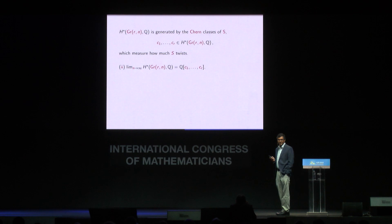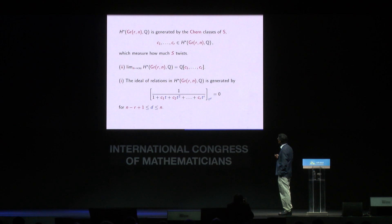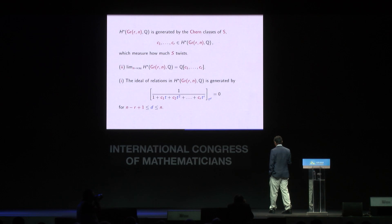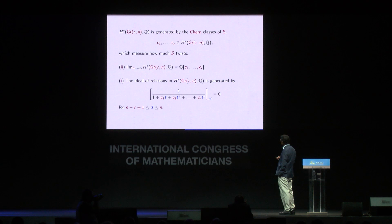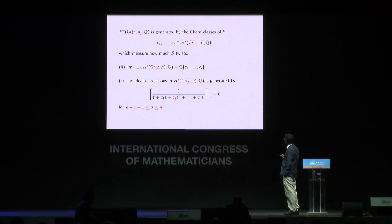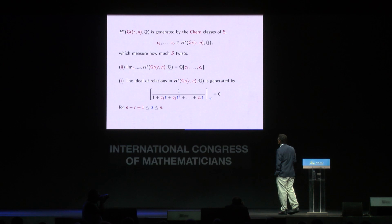The answer to the second question — the limit as n goes to infinity — is that it is the free algebra on these cohomology classes, with no relations. For fixed n the ring is not free, and the ideal of relations is given by a rather simple algebraic formula: one writes a function with a blue variable t, takes a power series expansion, and extracts coefficients that are polynomials in the Chern classes, which vanish for d in a certain range. These two lines give the complete answer for the Grassmannian.